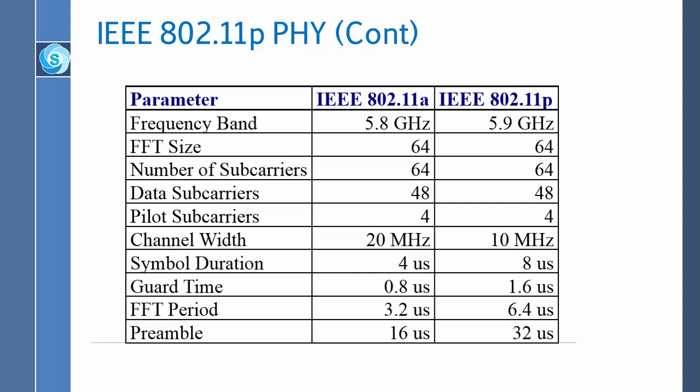The parameter table shows: FFT size is 64, data subcarriers are 48, pilot subcarriers are 4, and channel width is half of 802.11A. Symbol duration is twice as much, guard time is twice as much, the FFT period is all twice as long, and the preamble is also twice as long.